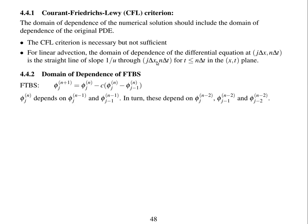We're going to look at the domain of dependence of the forward in time, backward in space advection scheme. Here is a repeat of the FTBS advection scheme. We can see that phi at position j time n plus 1 is dependent on phi j and phi j minus 1 at time n. And in turn, phi j n is going to be dependent on phi at time level n minus 1 at positions j and j minus 1.